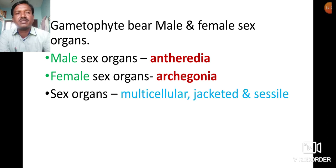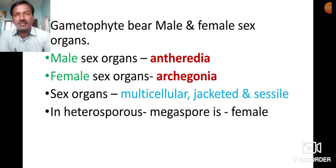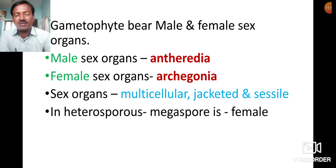The male and female sexual organs of pteridophytes are multicellular, jacketed (sex organs covered with cells), and sessile (no stalk). So in pteridophytes, sexual organs are multicellular, jacketed, and sessile.